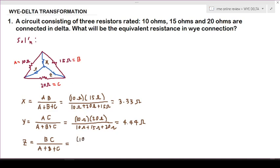We have 15 ohms times 20 ohms all over 10 ohms plus 15 ohms plus 20 ohms. So 15 times 20 over 10 plus 15 plus 20.